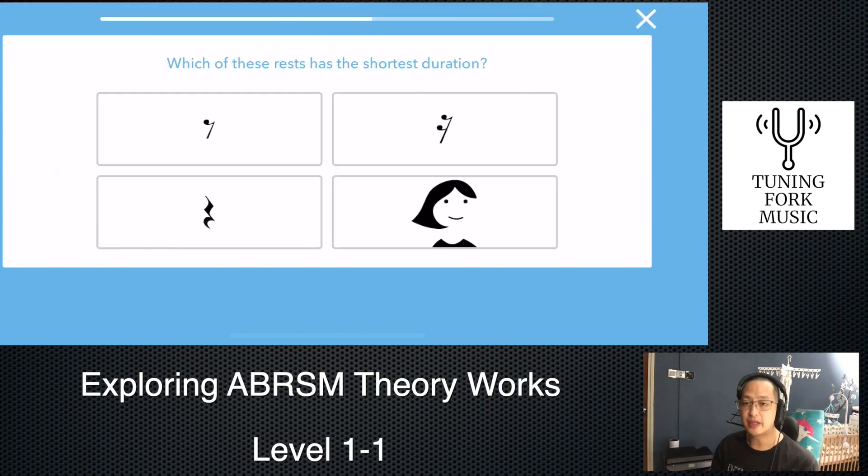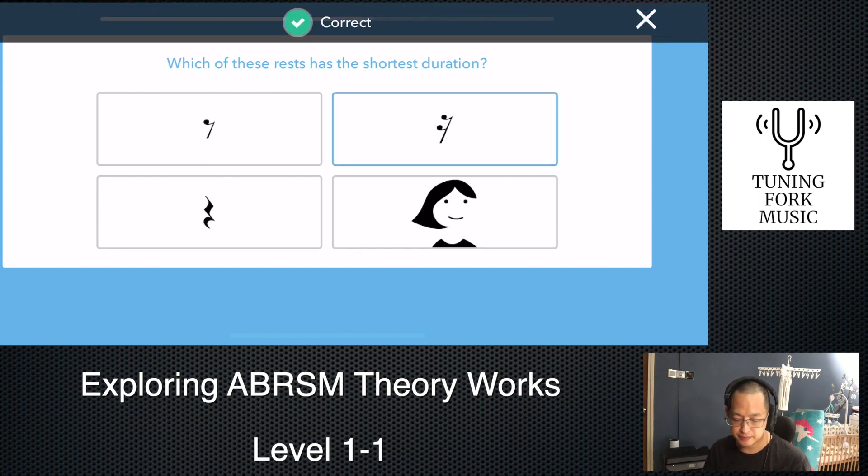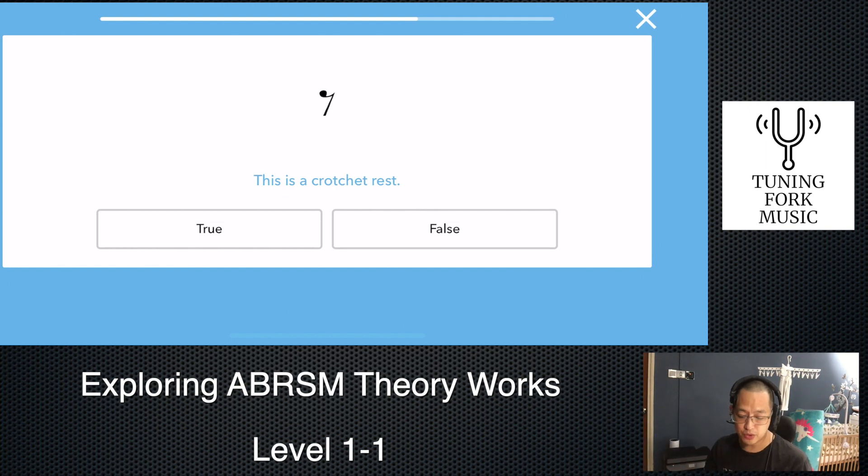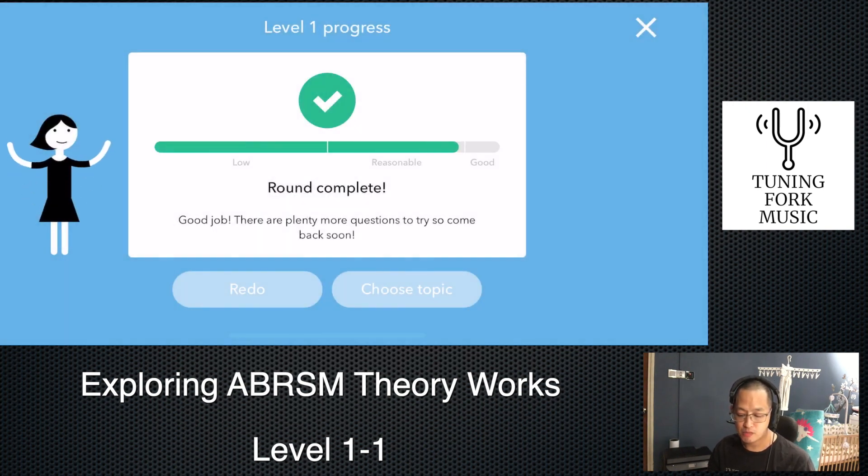And then, correct rest name. Two flags. Semi-quaver rest. Now, again, shortest duration versus the longest duration. The more flags, the tinier the slices, the shorter the duration. This is a crotchet rest, true or false. We don't see that nice big Z symbol. This has to be false. This is a quaver rest. Quaver rests have one flag. I don't see any flags. Therefore, we should answer false.